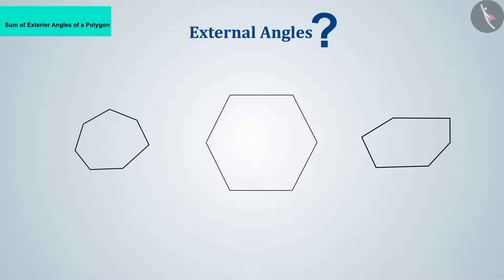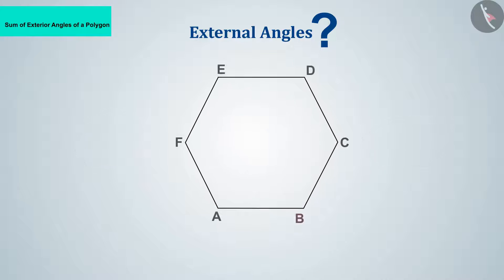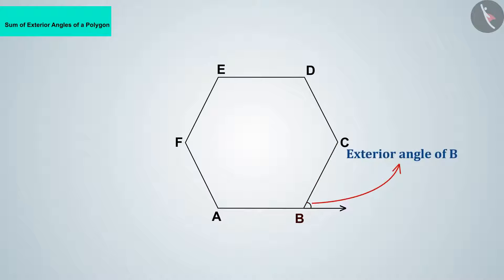What do you understand by the external angles of a polygon? Let us understand this with the help of a hexagon. Moving AB outward, the angle that forms between AB and BC outside the polygon is called the exterior angle of B. All external angles of the hexagon are shown in this figure.